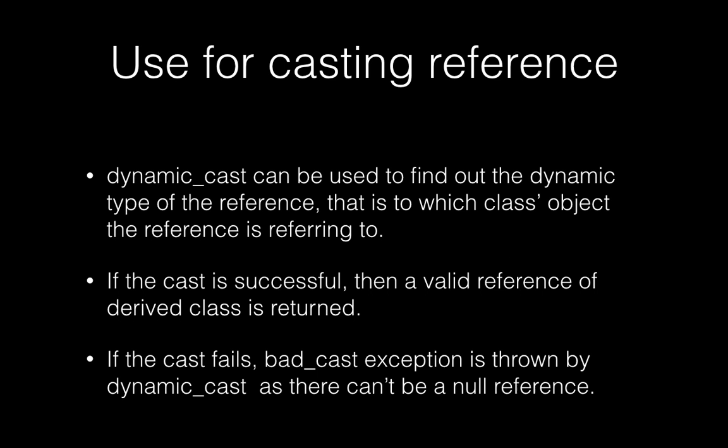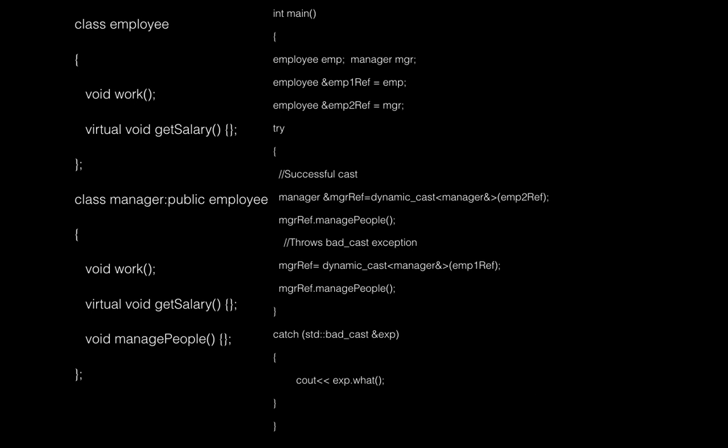Similarly, you can use dynamic cast for references, and it will tell you the dynamic type of the reference — that is, which class object the reference is referring to. If the cast is successful, you get a valid reference. If the cast fails, you can't get a null reference, but you get a bad_cast exception.